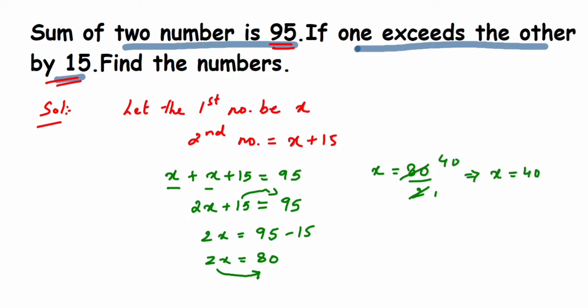If the first number is 40, that is x equals 40, the second number will be x plus 15. So you have to just add it, that is 40 plus 15. First number is 40. Second number equals x plus 15, which is 40 plus 15, which equals 55. You can add the numbers: 40 plus 55 equals 95. You can cross-check the answer that way.